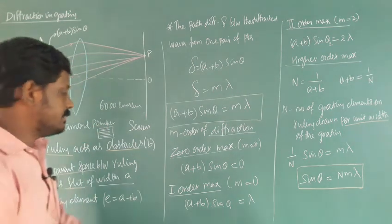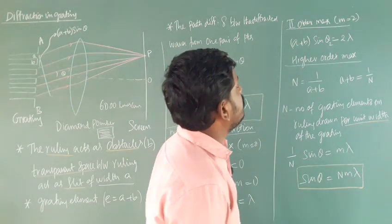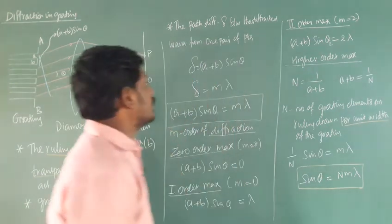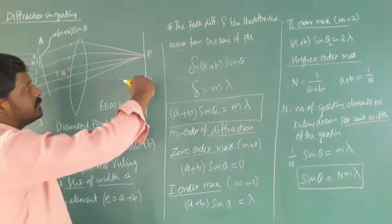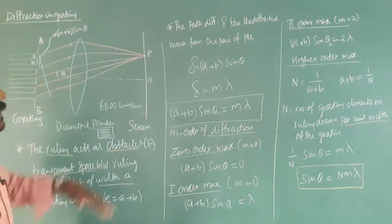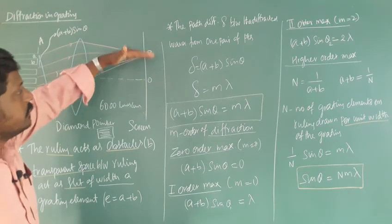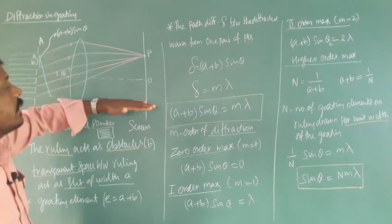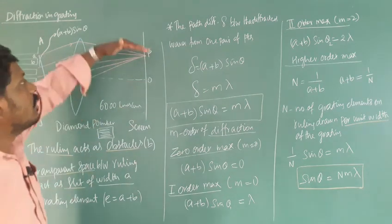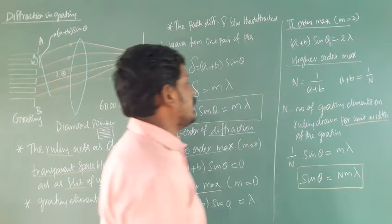For second order maximum, M equal to 2, so (A plus B) sin theta₂ equal to 2 lambda. This extends to higher orders on either side of the grating. After the central bright maximum, you get successive bright maxima at higher orders alternating with dark regions as you go outward.